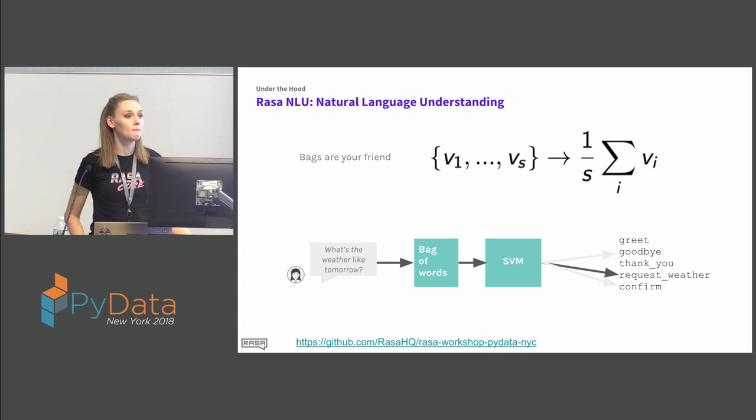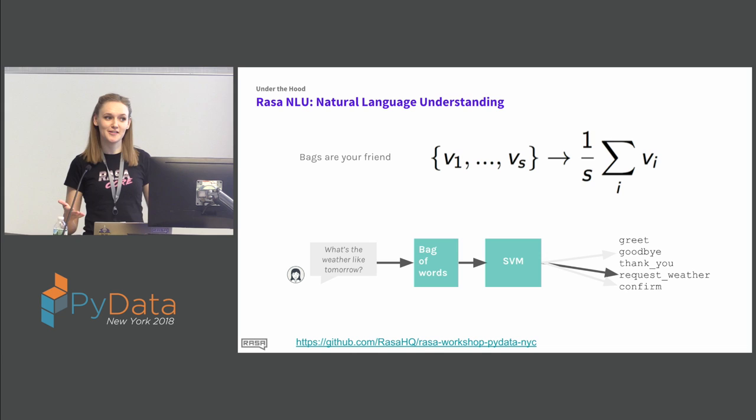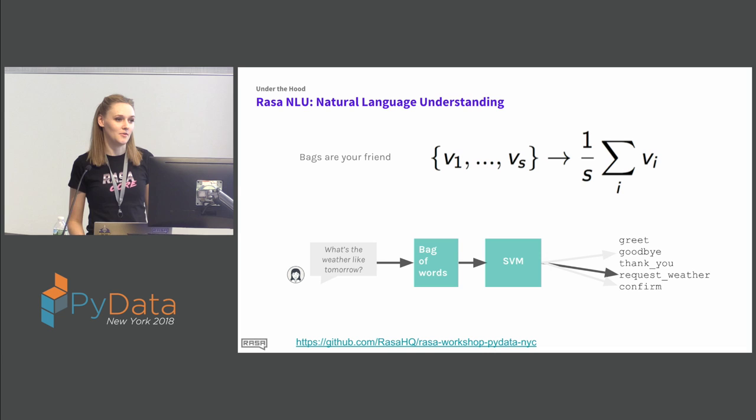Audience question: 'Are you using your own model, like a saved word2vec model, or can people bring in their own?' Answer: You can use what's implemented by default, but since Rasa NLU is open source, you are completely free to implement your own models. That's the feature I like most about Rasa — you can customize everything, see all the code, play around, and use models you built yourself.